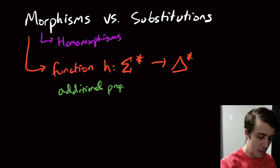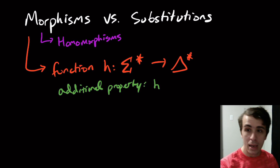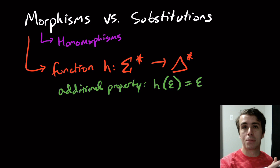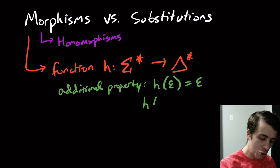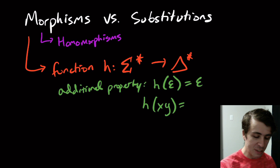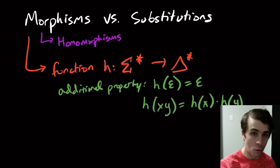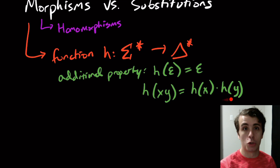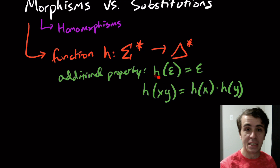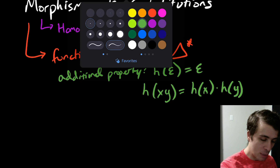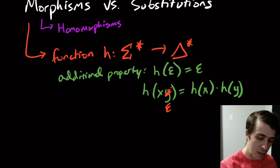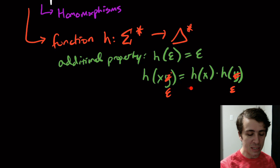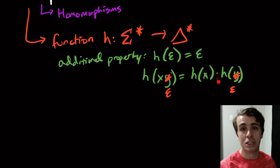The additional property is that h(ε) = ε — the empty string maps to the empty string — and h(xy) = h(x) concatenated with h(y) for two strings x and y. So if we have two strings we can break them up and apply the h function to each one. This is necessary because if y were the empty string, then h(x) must equal h(x) concatenated with h(ε), so h(ε) must be ε.